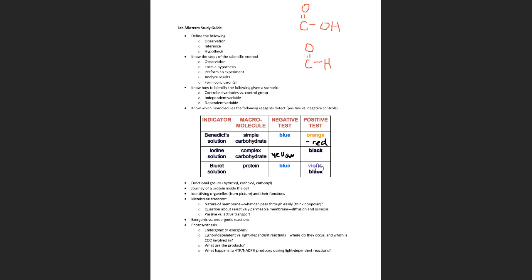Knowing the differences between passive and active transport will help tremendously in both lecture and lab. Active transport requires ATP or cellular energy because we're moving against the gradient — from an area of low concentration to high concentration — which is why it requires energy.